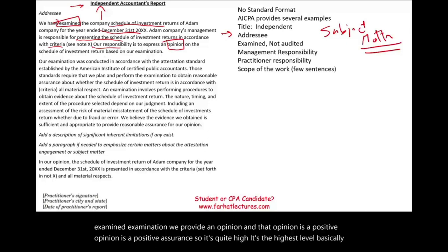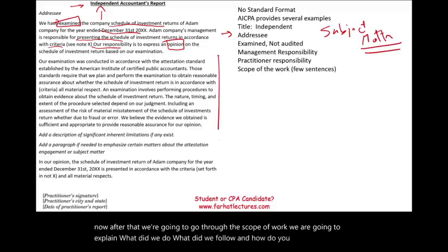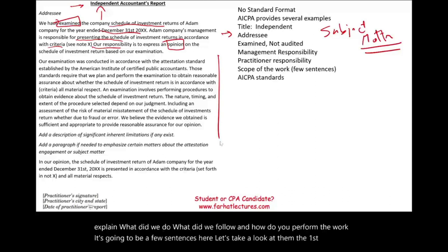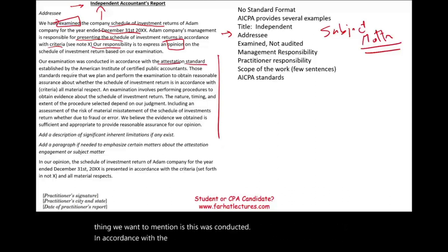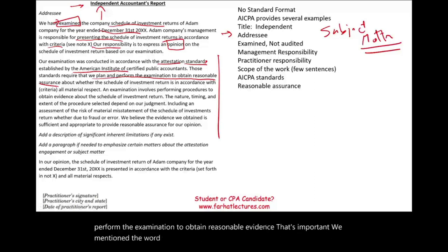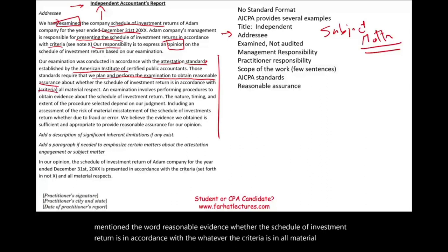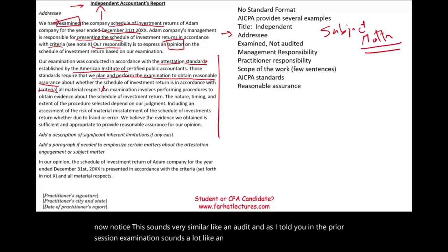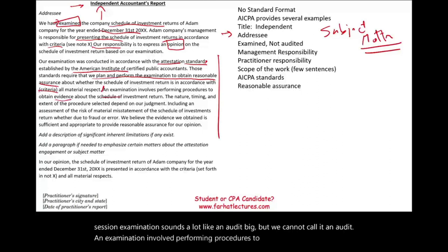After that, we go through the scope of work — we explain what we did, what we followed, and how we performed the work. The first thing to mention is that this was conducted in accordance with the attestation standards established by the AICPA. These standards require that we plan and perform the examination to obtain reasonable evidence — that's important. We mentioned reasonable evidence about whether the schedule of investment return is in accordance with the criteria in all material respects. Notice this sounds very similar to an audit, but we cannot call it an audit.